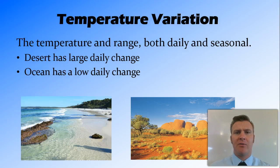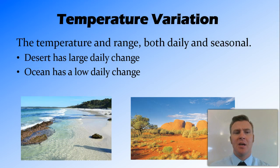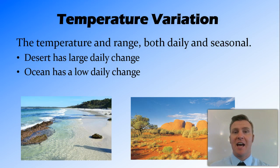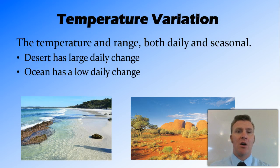Temperature variation is something that we can measure — we can measure the change in temperature both daily and seasonally. An example of an environment or biome that has a large daily temperature change would be the desert, where it can be very hot during the day but very cold at night.